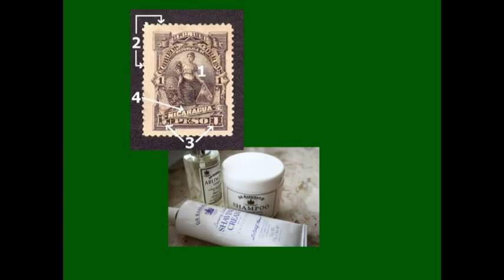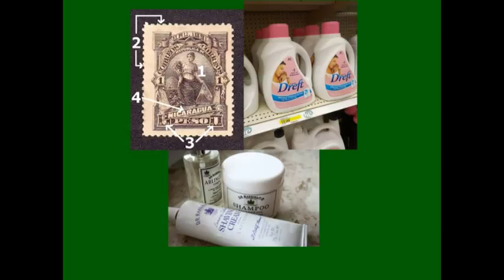Adhesives are used on stamps to stick the stamp onto the envelope. Fabric softeners coat the fabric with a thin layer of chemicals, making the fabric softer, more resistant to wrinkling and piling, and easier to iron.